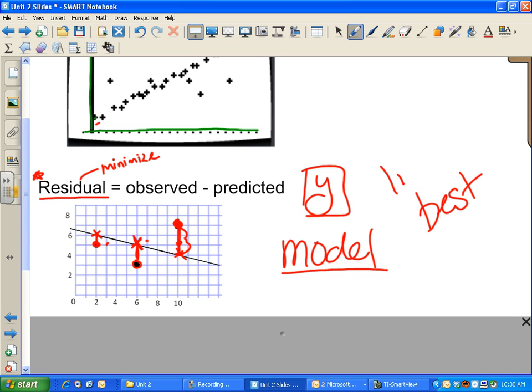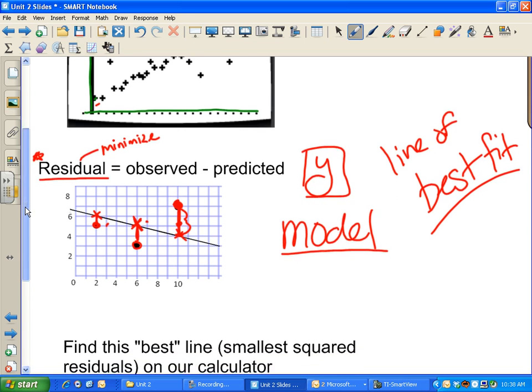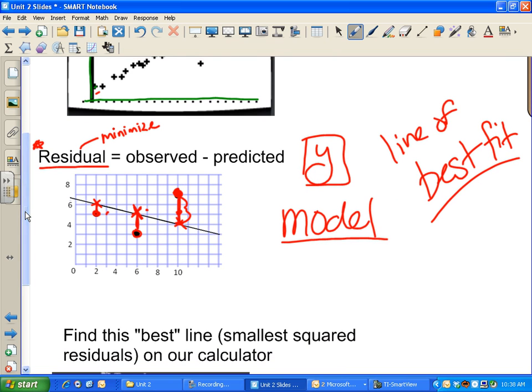Or some people call it the line of best fit. It's the line that has the smallest residuals, or squared residuals. So there is actually a very fun and exciting formula that could do that, but I don't think that sounds particularly interesting, learning a horrific formula. So we're going to get it from our calculator. I'm going to show you how to do that.